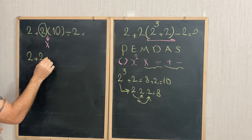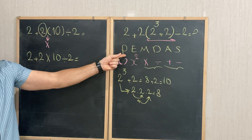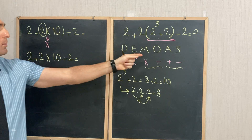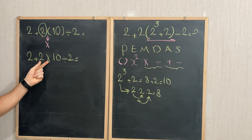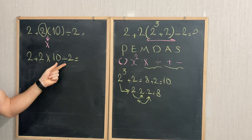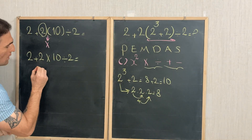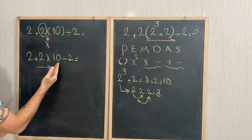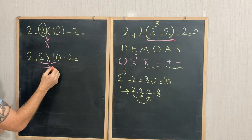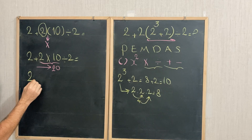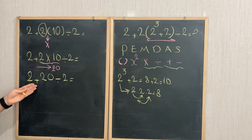Now applying PEMDAS: no parenthesis, no exponent. Next is multiplication and division — both are the same priority, so we start from the left. First: 2 × 10 = 20. Rewriting: 2 + 20 ÷ 2.